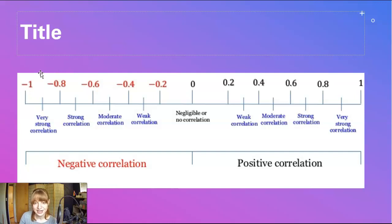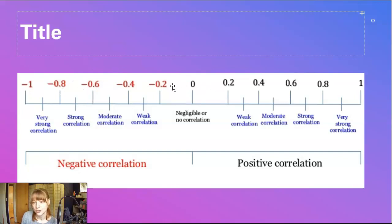R values range from negative 1 to positive 1. The closer they are to these ends — to negative 1 or to 1 — the stronger the association. So this end is a very strong negative, these are moderate negative, this is no association, moderate positive, and strong and perfect correlations.